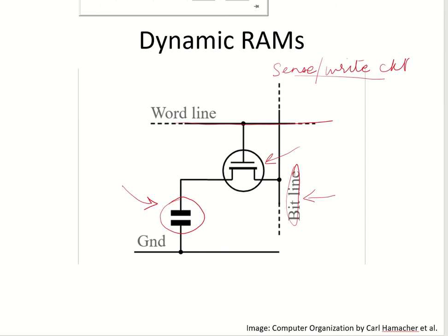And if the charge on this capacitor is less than the threshold, meaning it represents zero, then the sense-write circuit will completely pull the bit line down to ground level to discharge the capacitor fully. In this way, a read of this cell automatically refreshes the contents of the cell.